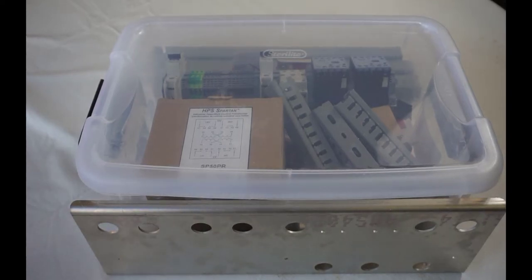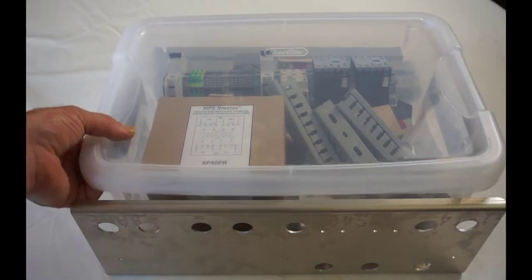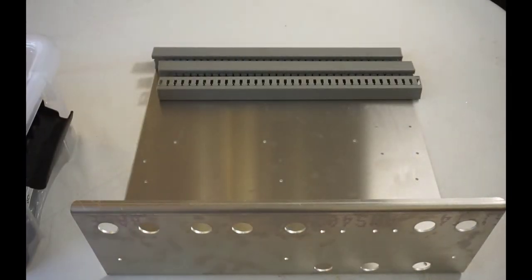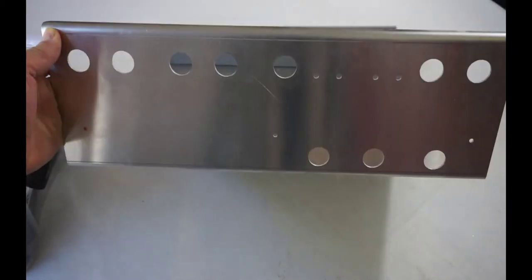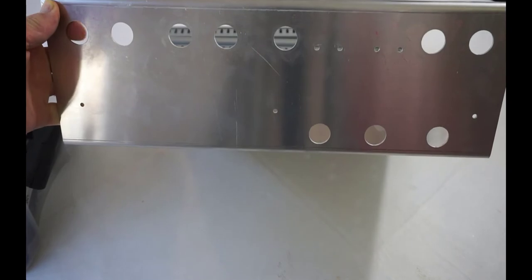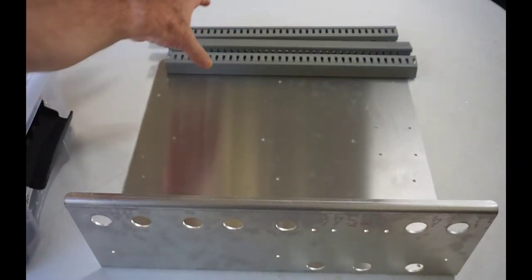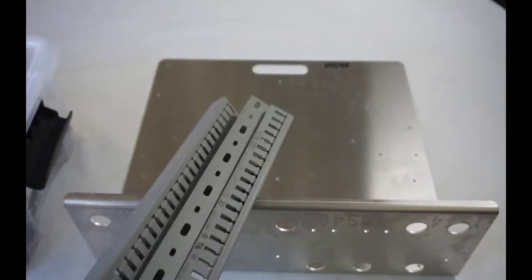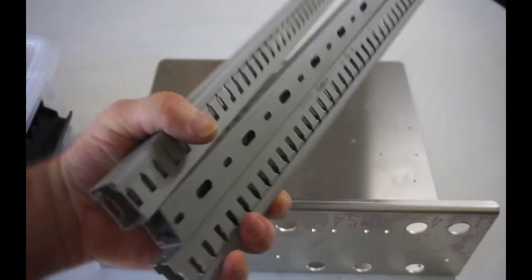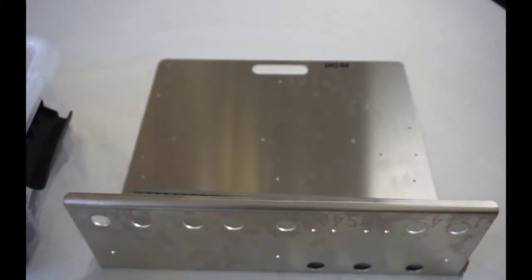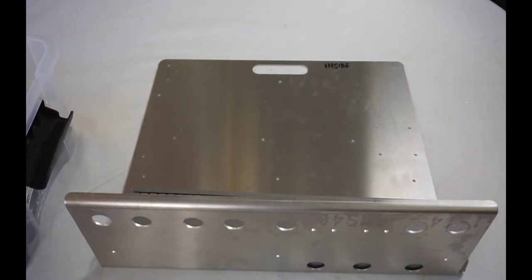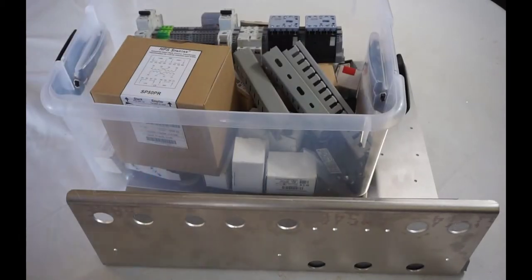Alright, so you should have your box here full of parts you picked up from the bookstore or from Ted. First off, we've got the chassis. You can see the chassis here has pre-punched holes in it, and you should have three wire guides there.